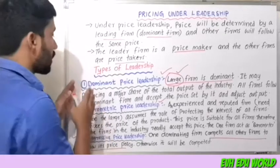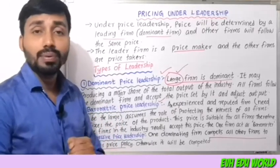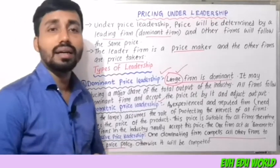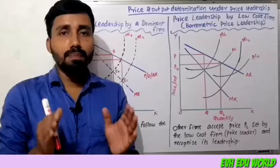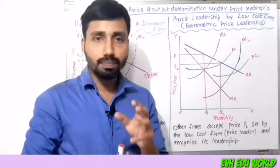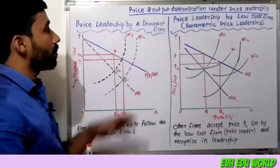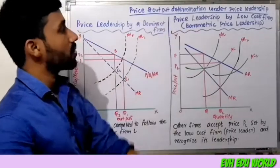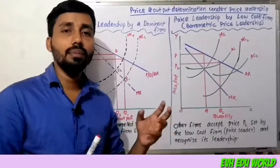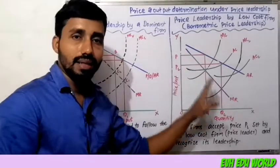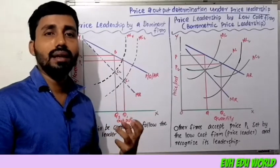So, summarizing the three types: we have a large dominant firm, an experienced and reputed firm, and an aggressive firm. Now, price and output determination under price leadership includes: price leadership by a dominant firm, price leadership by a low cost firm, and barometric price leadership.